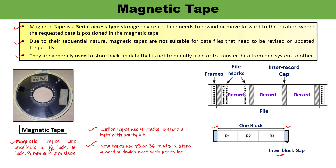In a nine-track tape drive system, eight bits are used for binary information and the ninth bit is the parity bit, which is used for error checking. Since only a single parity bit is used, it can detect only one-bit errors and cannot detect multiple errors.